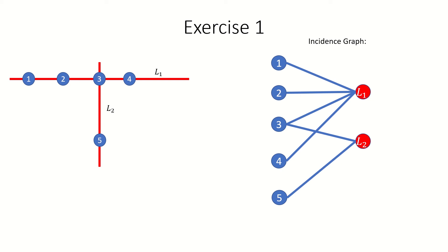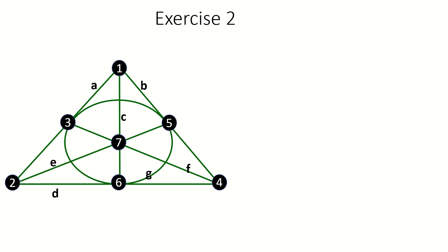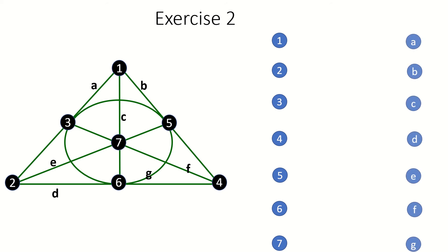As another exercise, let's find the incidence graph of this incidence structure, known as the Fano plane. First, create a vertex for each point and for each line. Then link a vertex that represents a point to a vertex that represents a line when they're incident in the incidence structure. As an example, vertex 1 will be adjacent to vertex A, because point 1 is incident to line A in the Fano plane. Feel free to pause the video and complete the incidence graph yourself.